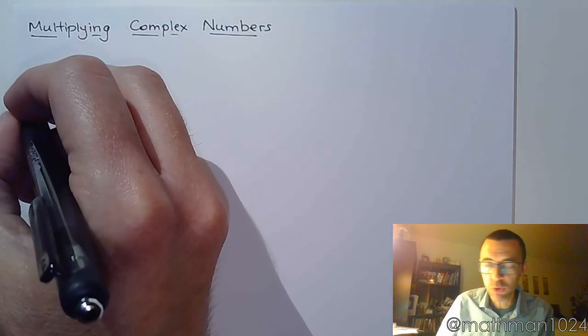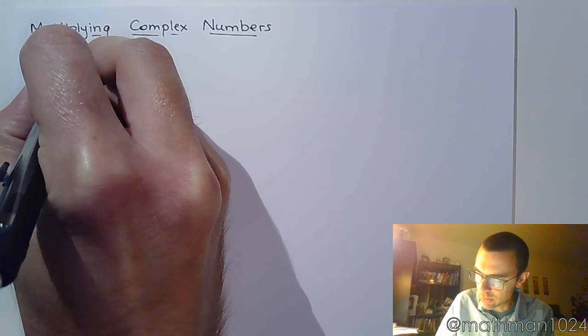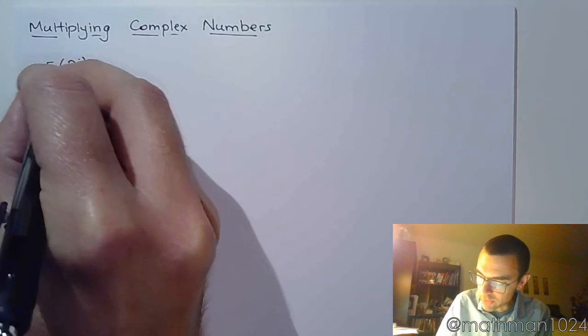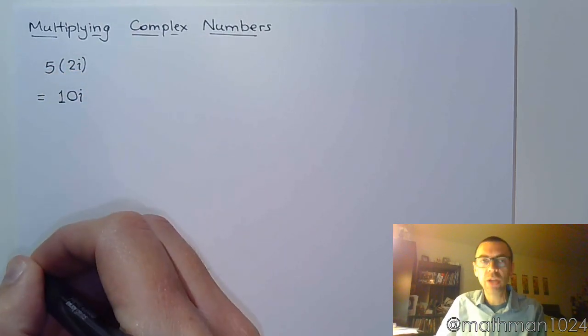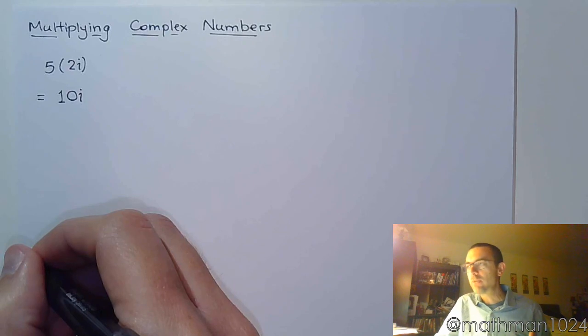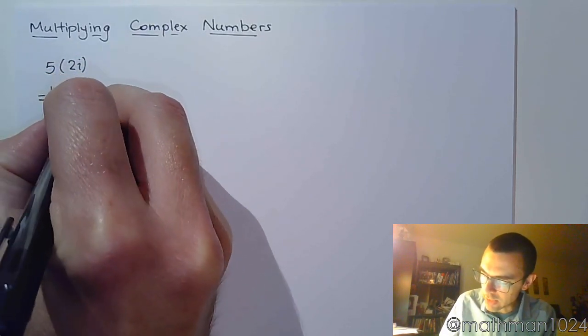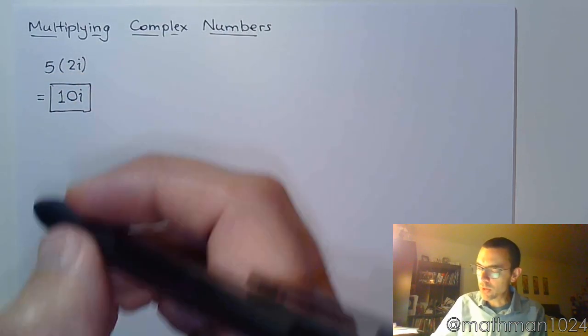So let's look at multiplying here. If I take 5 times 2i, well there's not really a whole lot to do here, you're just multiplying. 5 times 2i is 10i. Just like if that i had been x, 5 times 2x is 10x, so 5 times 2i is 10i. Not a whole lot going on there.